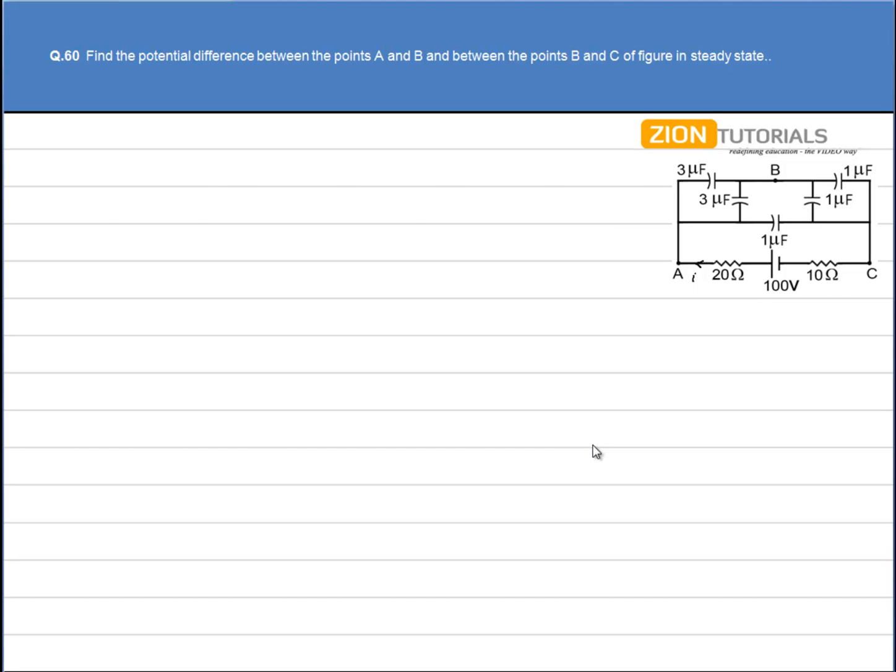Find the potential difference between the point A and B and point B and C of the figure as shown. In this question we use the concept that at steady state all the capacitors act as an open switch. That is, no current flows through the capacitors at steady state.